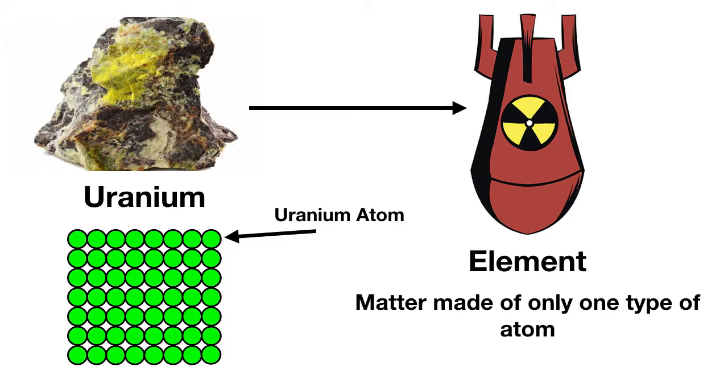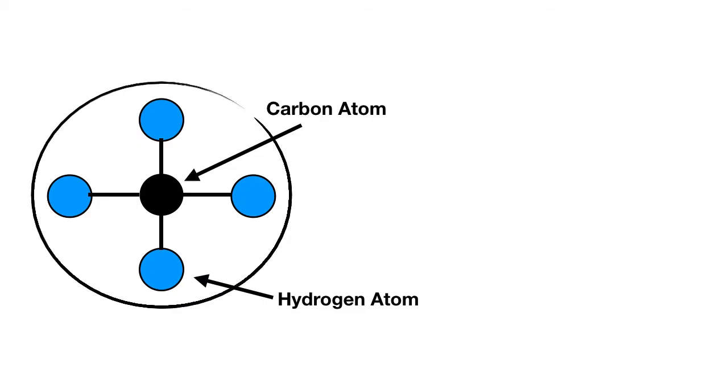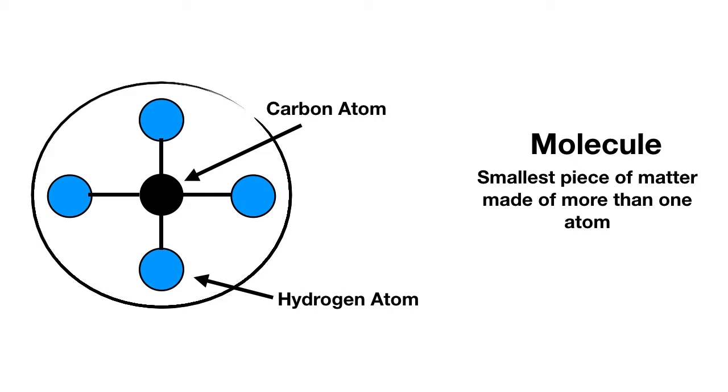Here's your next problem. This is a piece of matter that has one carbon atom in the middle, and it's surrounded by four hydrogen atoms. What would we call this one piece of matter? This one piece of matter is a molecule. It's the smallest piece of matter that's made of more than one atom.